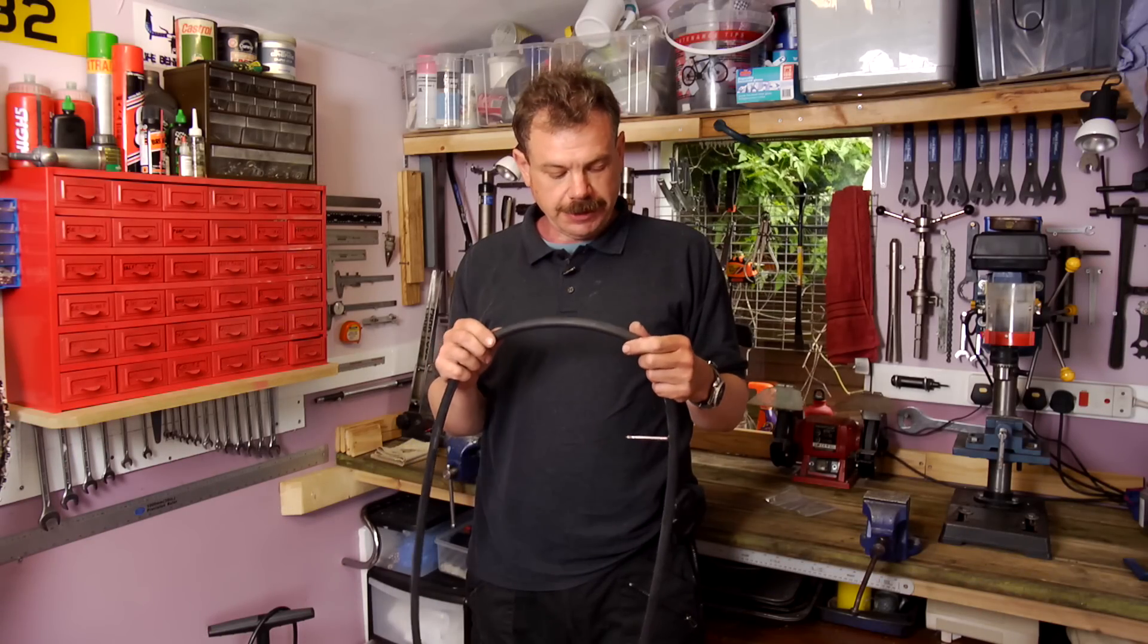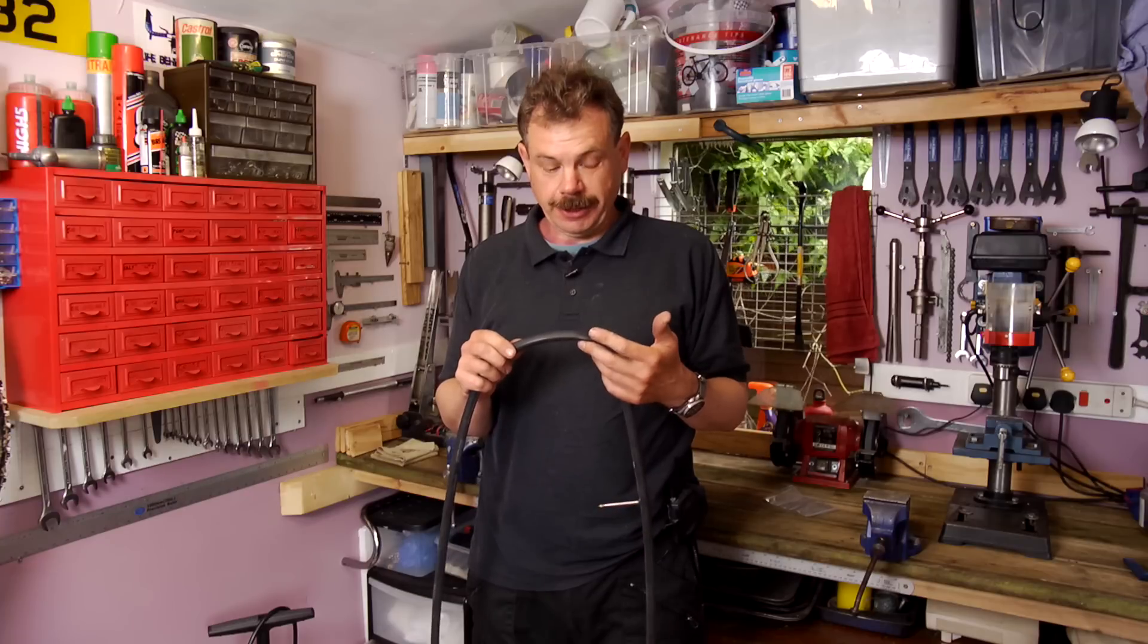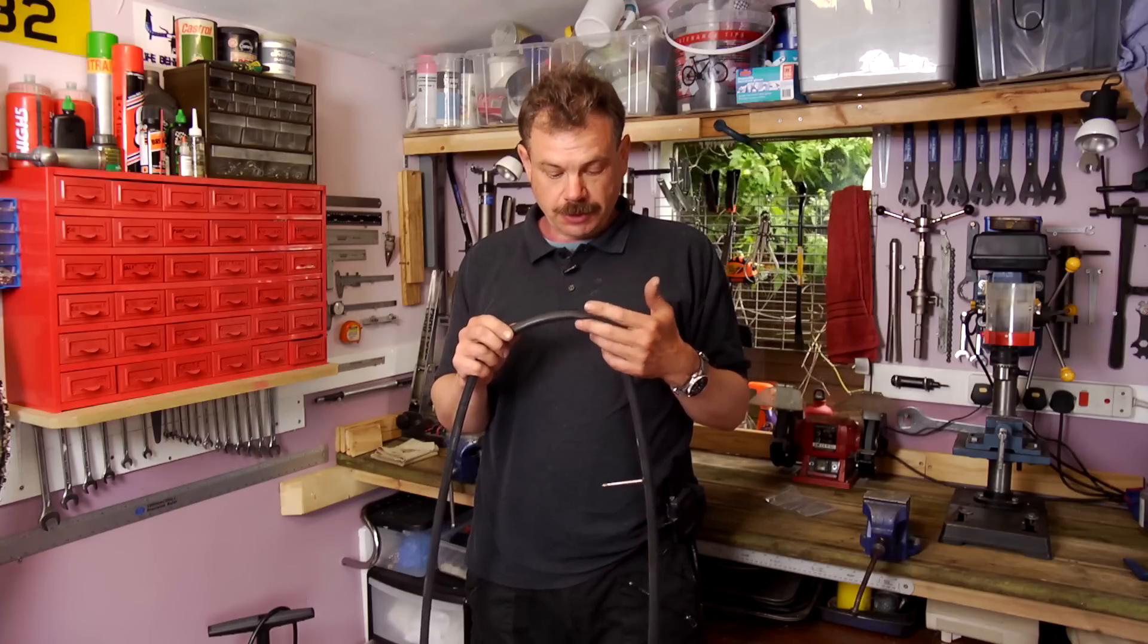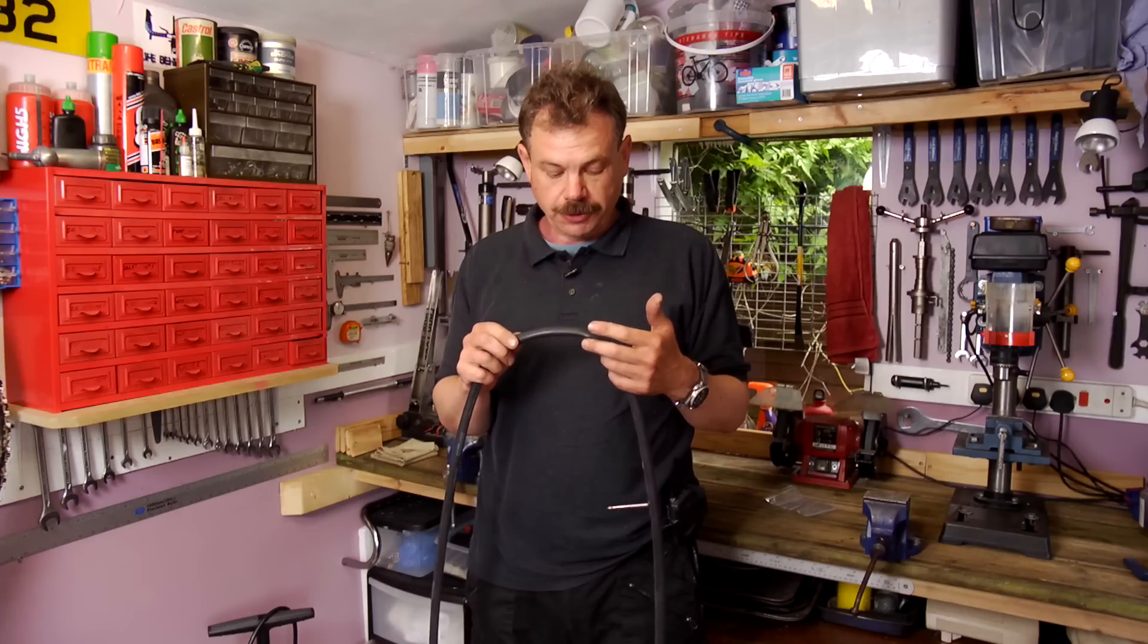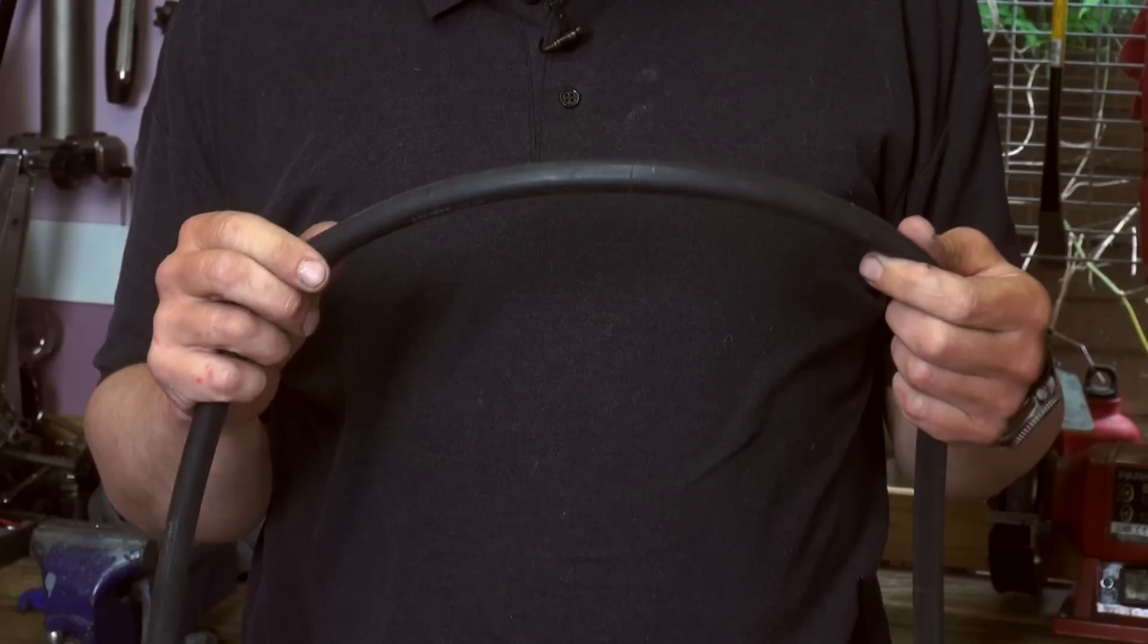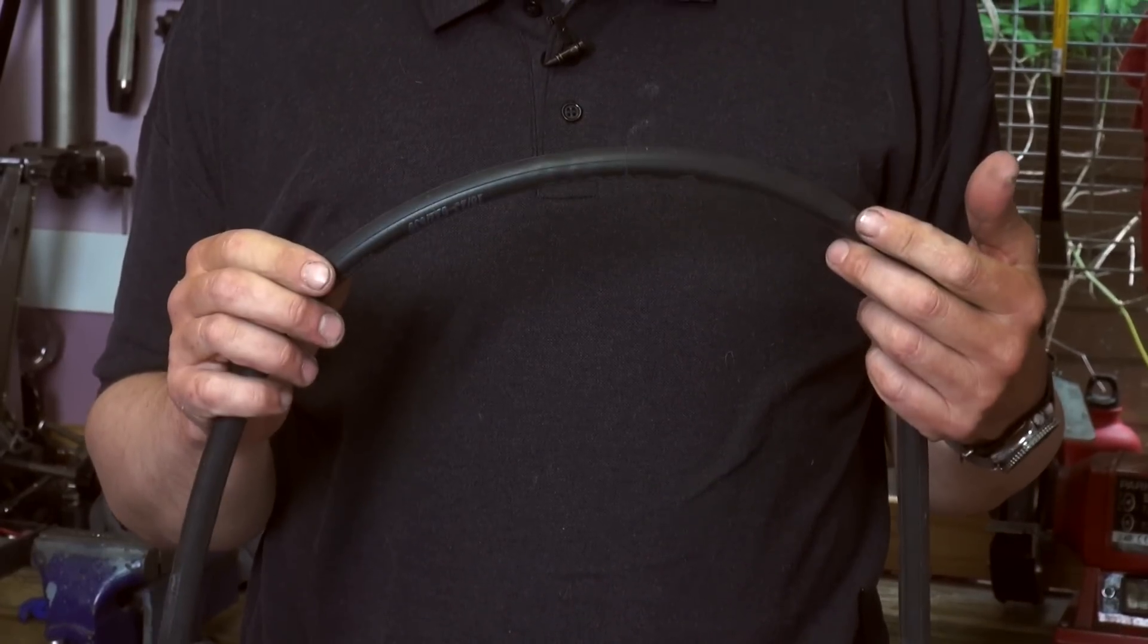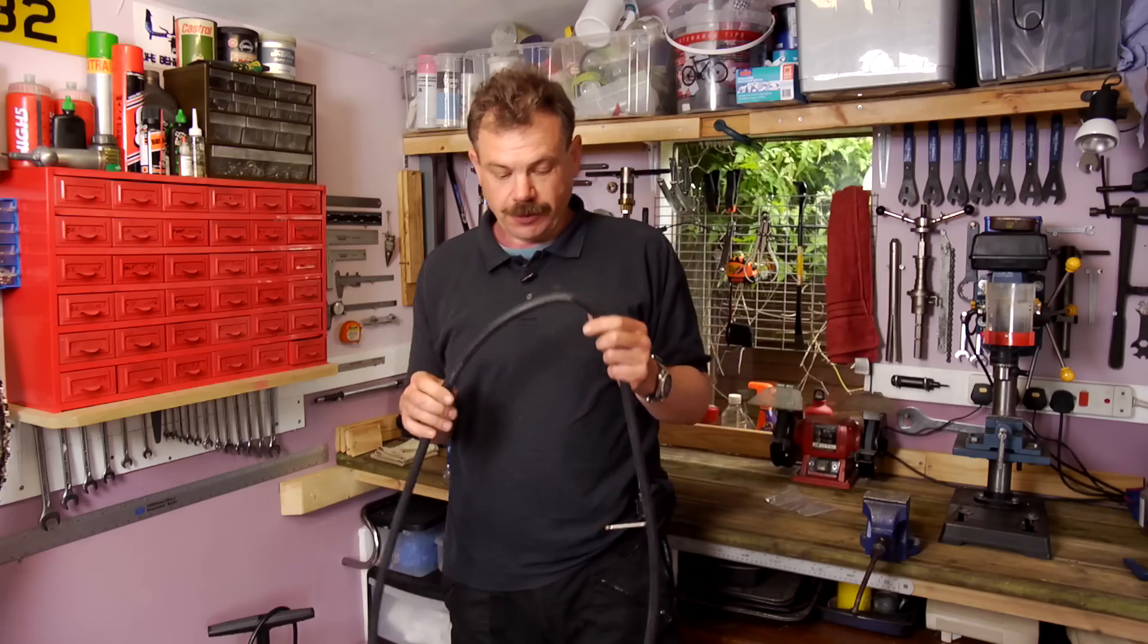In this film we're going to show you a little trade secret that can improve the efficiency of your bicycle so you go faster. It can give you more grip when you're cornering and can make changing an inner tube easier. It will also protect your inner tubes and it doesn't cost a penny.